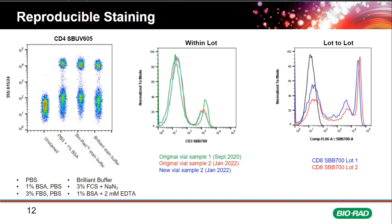Beyond brightness and spectral characteristics, StarBright dyes offer very reproducible staining. They work in virtually any buffer — PBS, PBS/BSA, PBS/FBS, special multiplexing buffers for polymer dyes (though they don't require special buffers themselves), and even buffers containing sodium azide or EDTA. CD4 staining data on human peripheral blood using different buffers demonstrates consistent performance across all conditions.